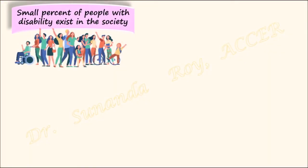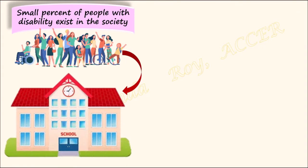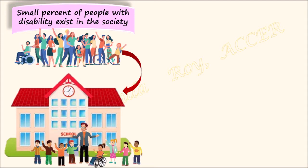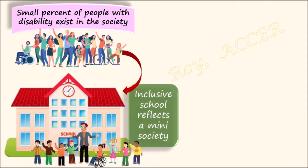If we look around, we can find that there is a small percentage of our society who are excluded due to some kind of diversity or disability. An inclusive school aims at including such members of the society. We must remember that inclusive schools should consist of a small percentage of marginalized or excluded individuals. A school which has a higher population of students with challenges or disabilities compared to neurotypical students cannot really be called an inclusive school, because an inclusive school reflects a mini society and students are able to adjust effectively into society after completing their schooling.